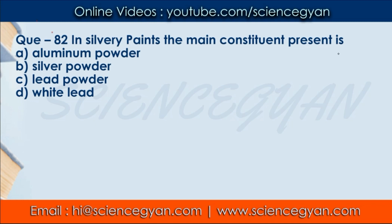Question number 82: In silvery paints, the main constituent present — in paints that have a silvery shine, what is their main component? The correct answer is A — aluminium powder. Aluminium powder gives the silvery shine. Aluminium is the only metal that, even in powder form, retains its metallic luster. So the correct answer is A.